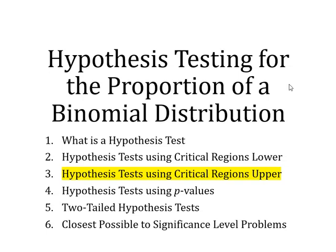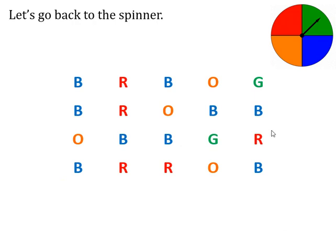Hello again folks. This is my third video on hypothesis tests for the binomial distribution, and this time, very similar to the critical regions method for lower tailed tests, we're now going to have a look at doing it for what we call upper tailed tests. We're going to go back to the spinner we looked at before, and earlier we looked to see whether getting two greens was few enough to decide that the spinner was biased against green.